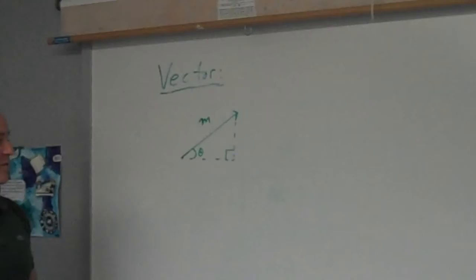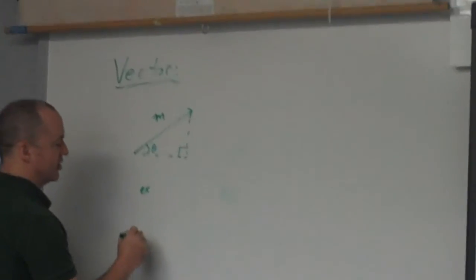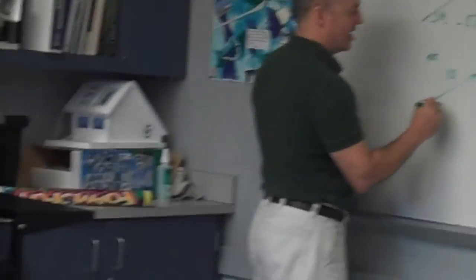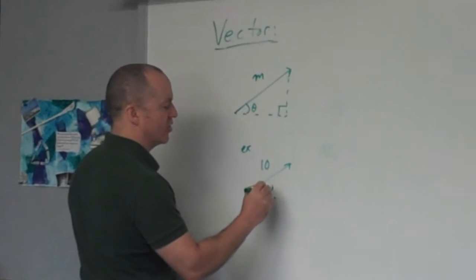But if instead of giving you the I and J components, what if I give you the magnitude of the vector and the angle theta? If I give you the magnitude, for example, if I tell you that there's a vector of length 10 going up and to the right at an angle of 40 degrees.